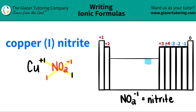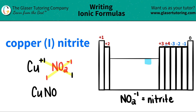Now we're ready to write the formula. I have Cu — I only have one, so I don't need to write a subscript. Then I have NO₂ — I only have one nitrite, so I don't need parentheses or anything like that. So copper(I) nitrite is simply CuNO₂.